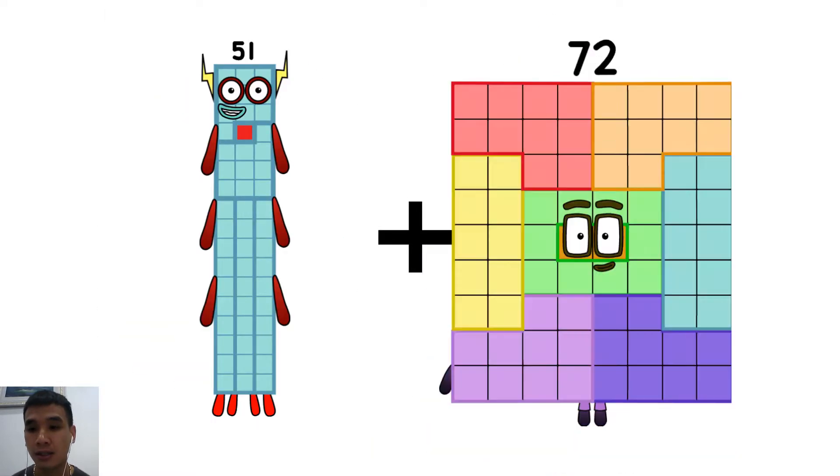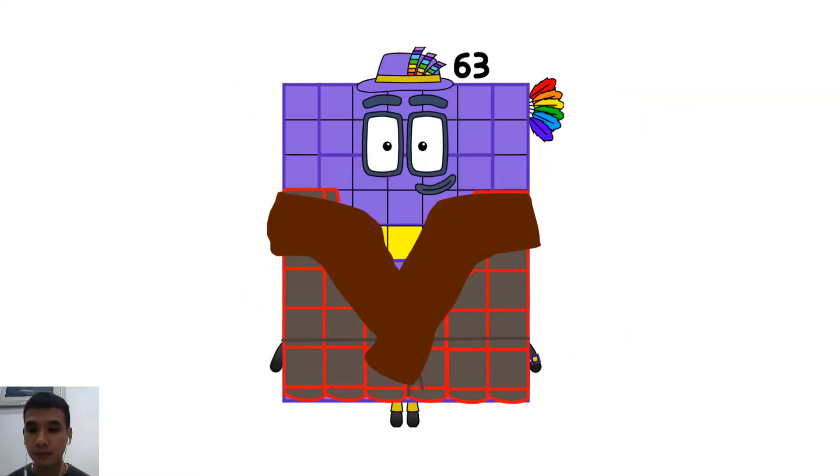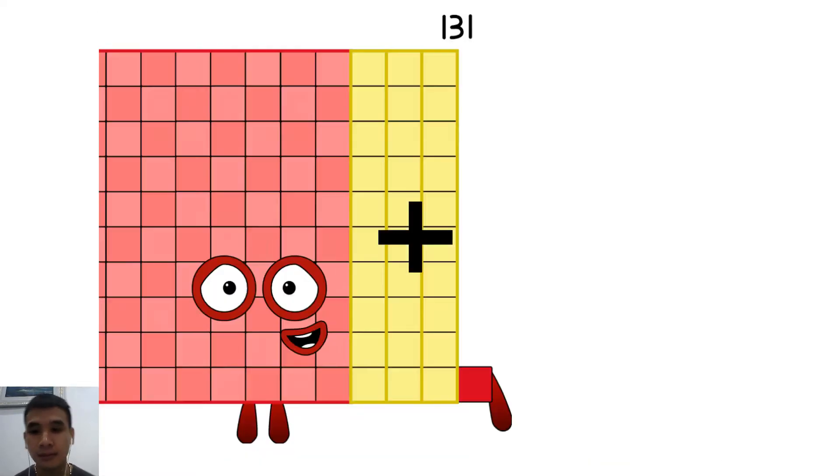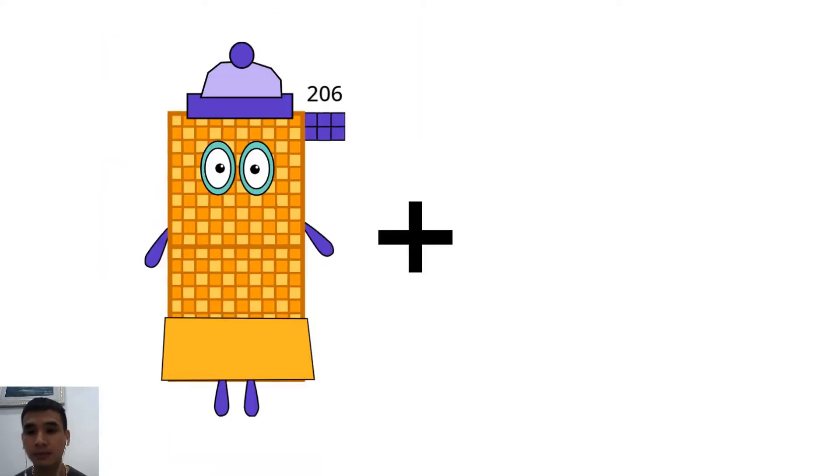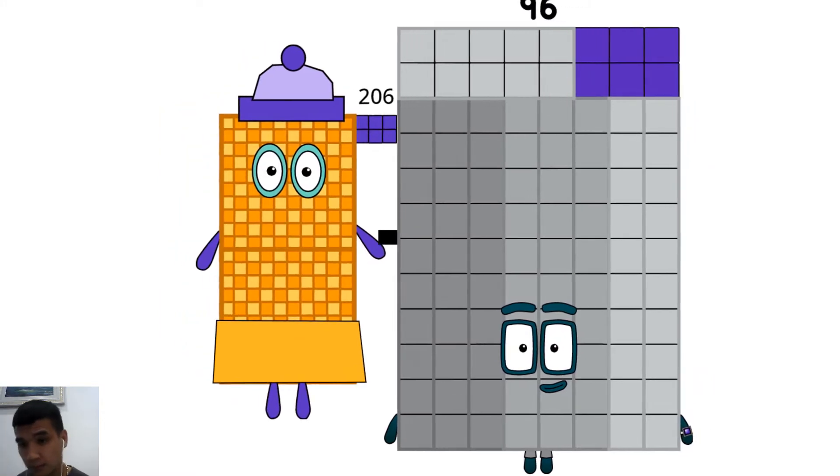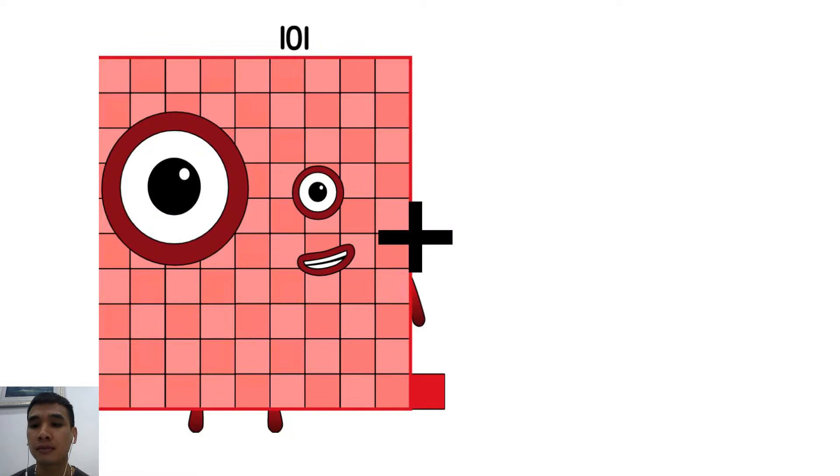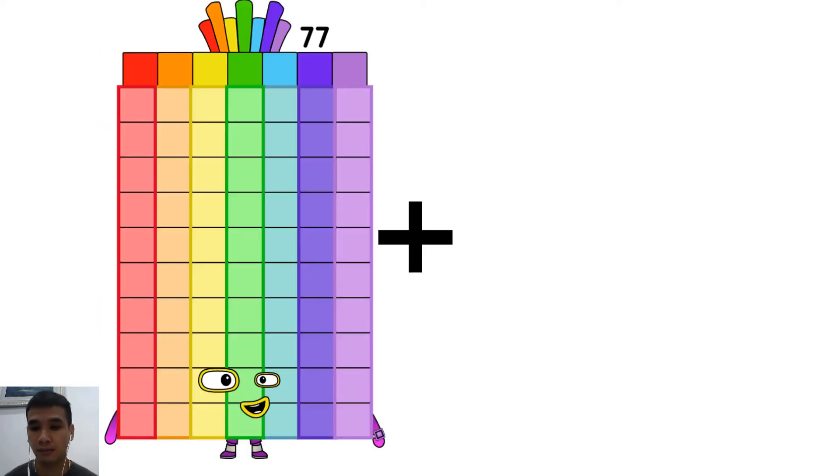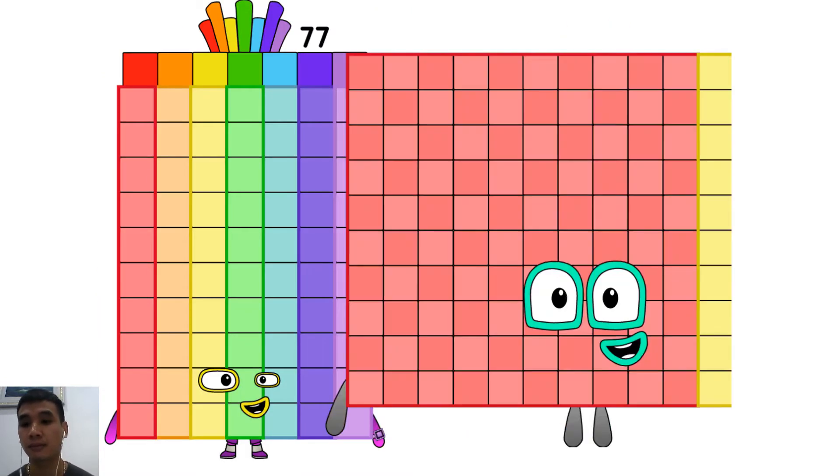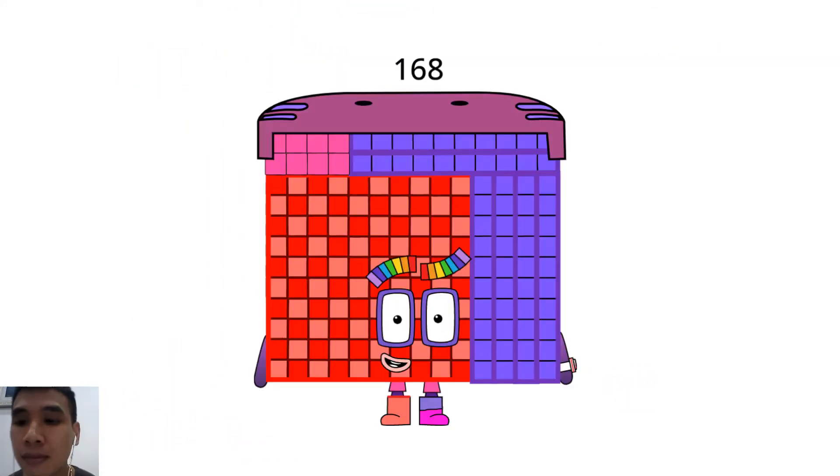51 plus 12 equals 63. 206 plus 96 equals 302. 77 plus 91 equals 168.